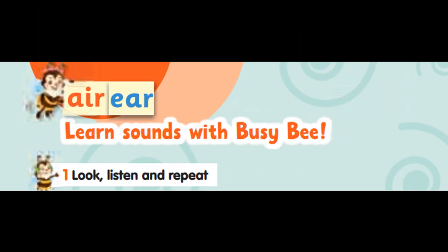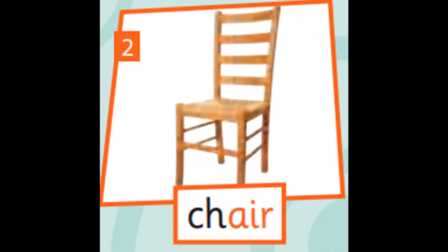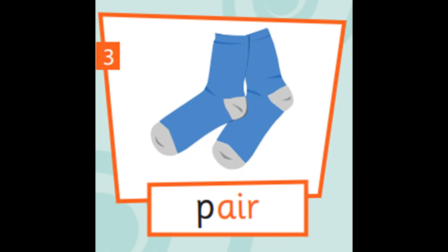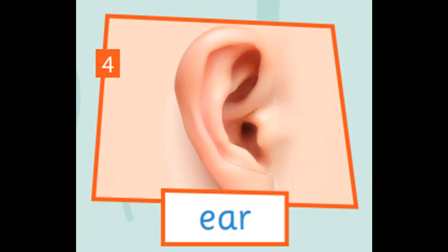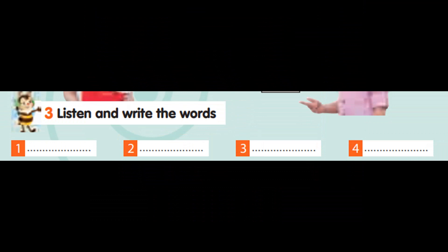Unit 4, page 64, Exercise 1. Look, listen, and repeat. Unit 4, page 64, Exercise 3. Listen and write the words. 1. Beard. 2. Hair. 3. Ear. 4. Chair.